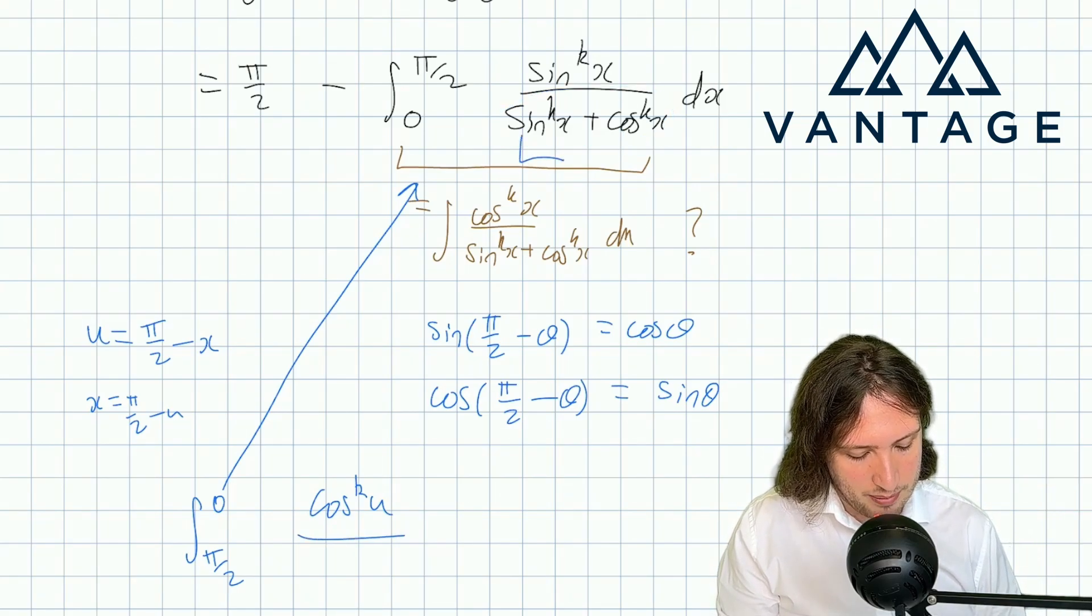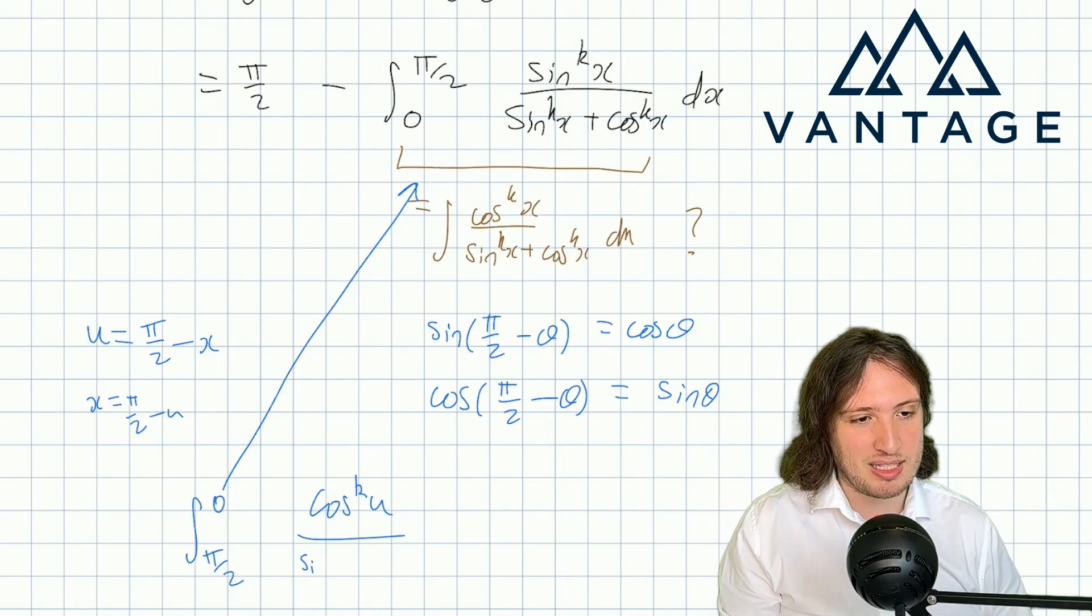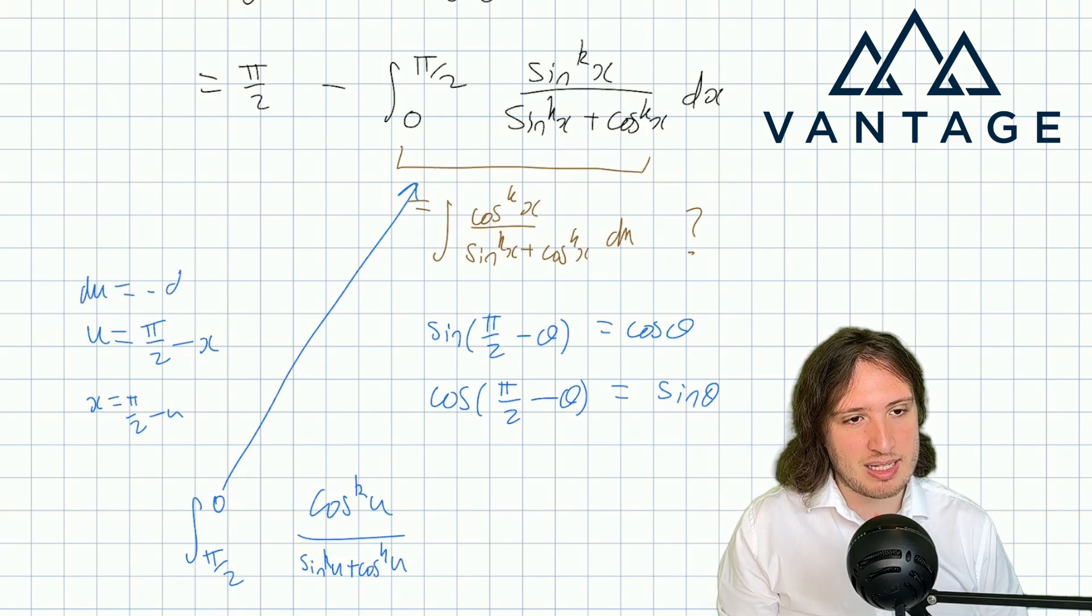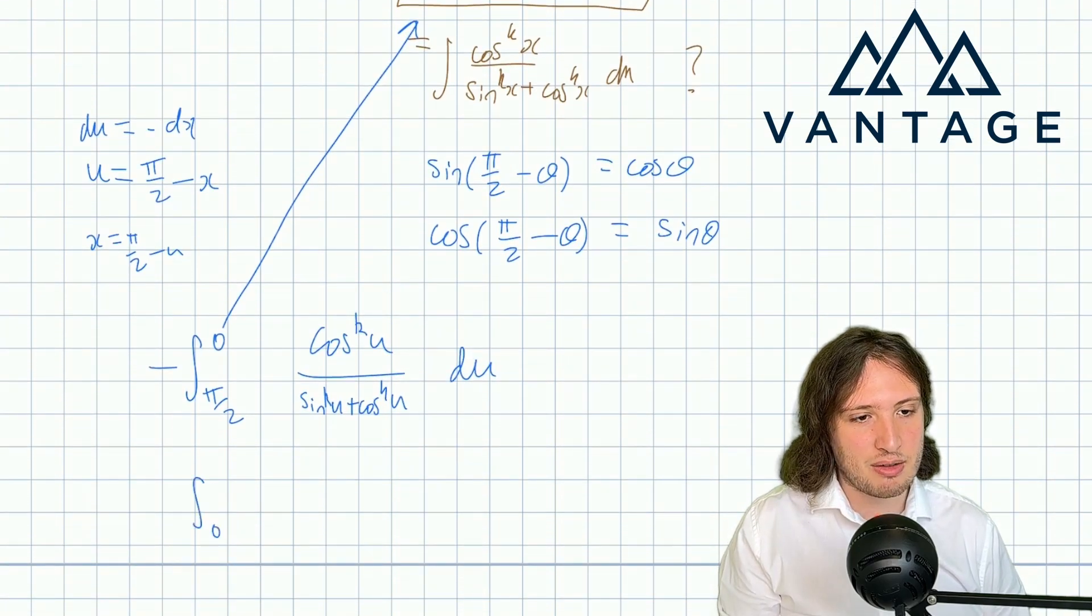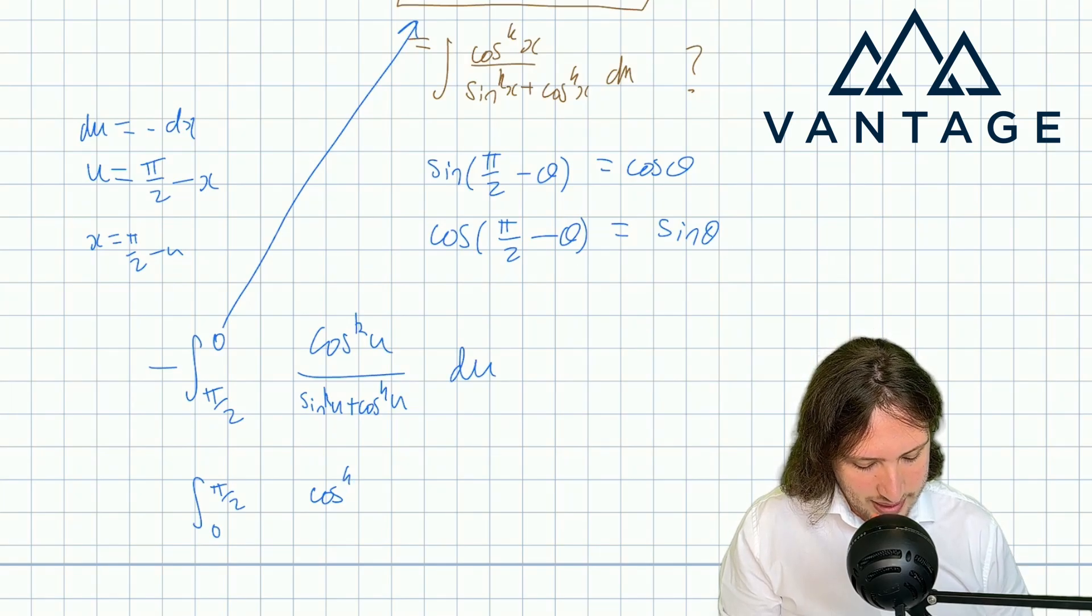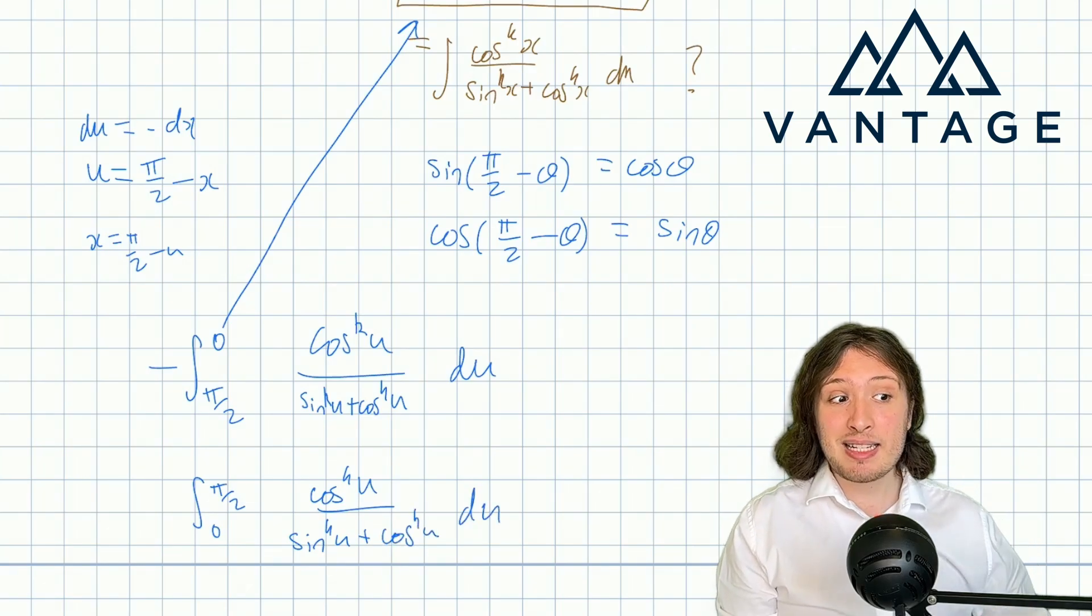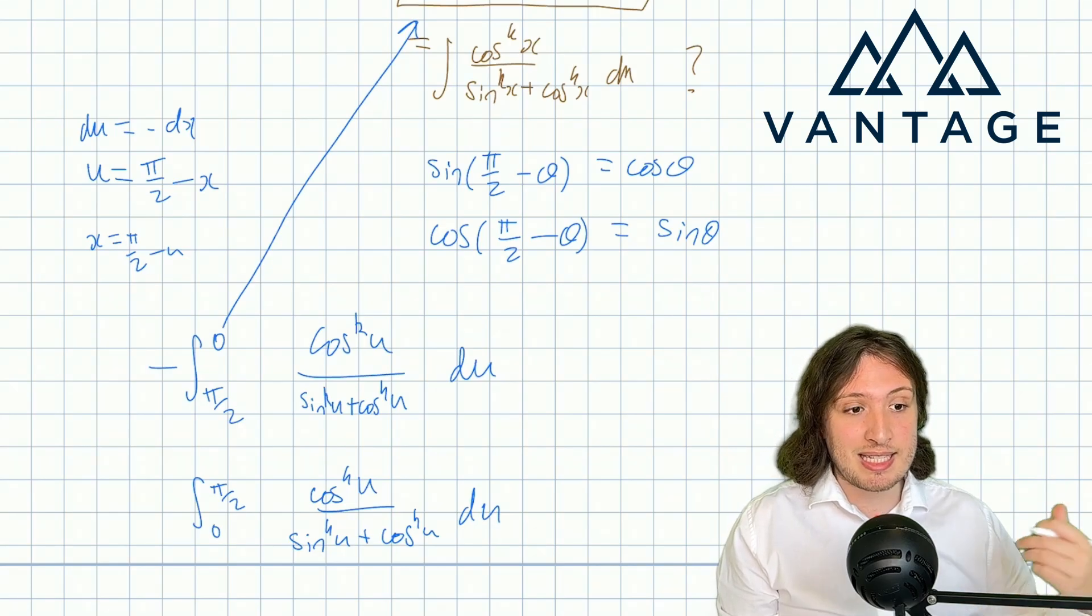These guys switch as well, but because I've got both of them, the denominator stays the same—cos to the k plus sine to the k is the same as sine to the k plus cos to the k. And as for my du, well, du is minus dx, but brilliant because now I can use my minus to flip the integration limits back around the right way. And what I've got is that this is the integral of cos to the k u over sine to the k u plus cos to the k u. Doesn't matter that it's a u—the integration letter is just a dummy variable, it's a stand-in that we're going to replace when we finish integrating with the upper and lower limits. So this here is exactly the same as this thing here.